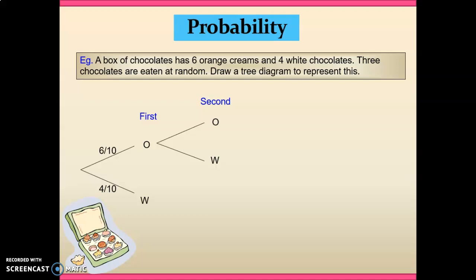And particularly when we look at this portion here, if we were to have initially taken the orange chocolate or one of the orange creams out, we've now only got five of those orange creams left. So as I've already eaten one, we've only got five of the remaining nine chocolates left are orange creams.